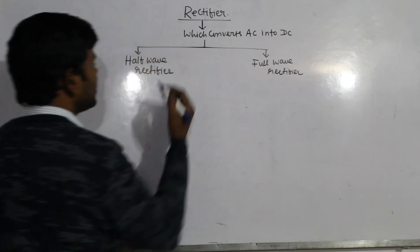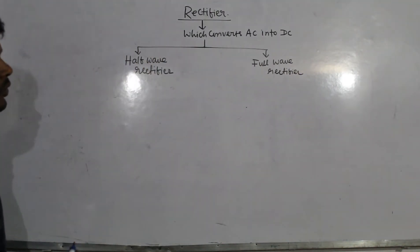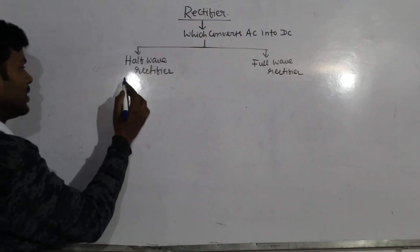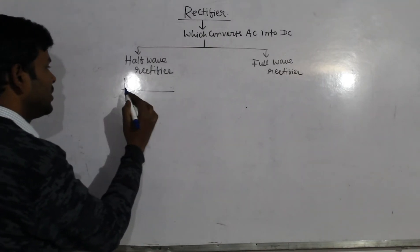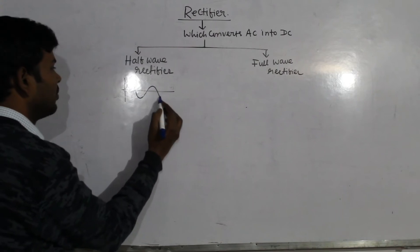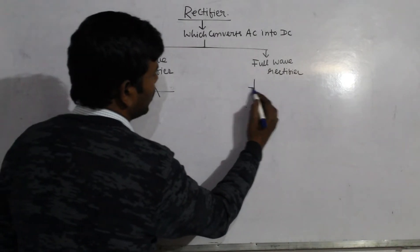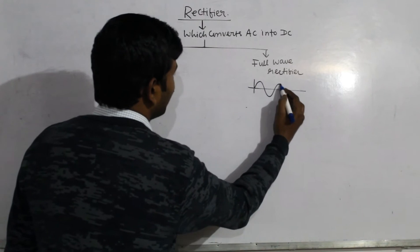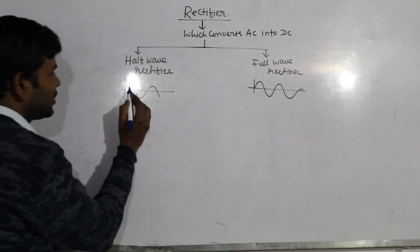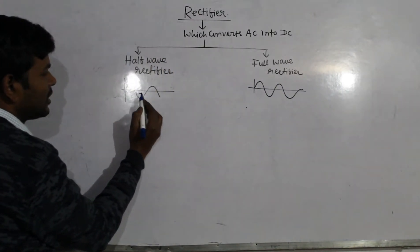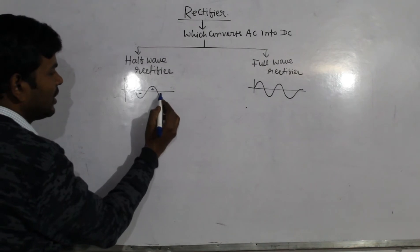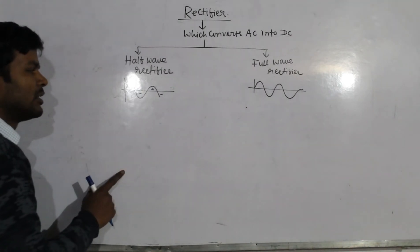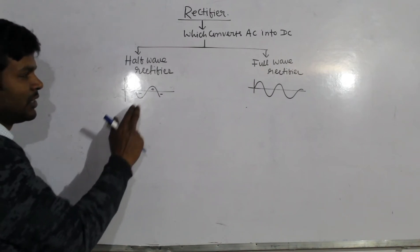What is the basic difference between half-wave rectifier and full-wave rectifier? Suppose this is the input AC, represented by a sine wave. AC will be fed and converted into DC. There will be alternate positive cycles and negative cycles in case of AC.